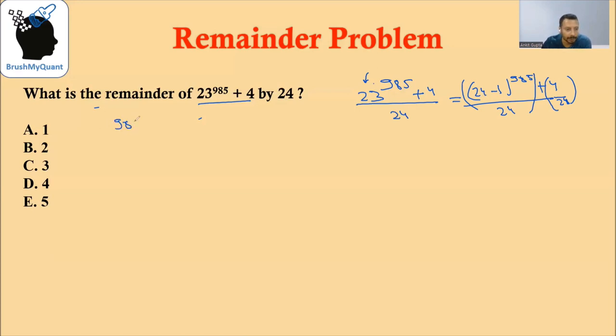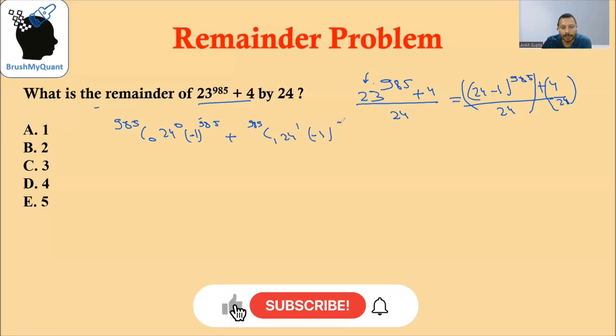If we expand this, we will have 985 C0, 24 raised to 0, 1 raised to 985 or rather minus 1 raised to 985, plus 985 C1, 24 raised to 1, minus 1 raised to 984, and so on.